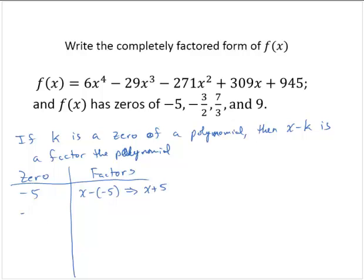We have a zero of negative 3 halves. So we'll write that as x minus negative 3 halves, which we write as x plus 3 halves.